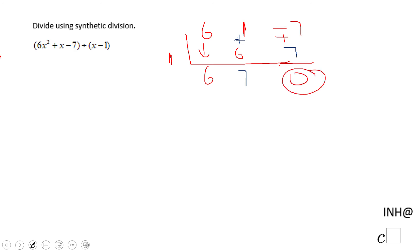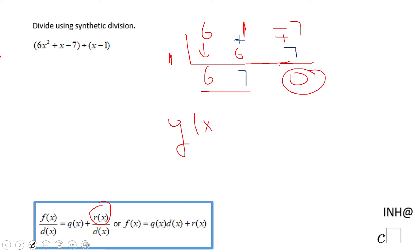This last number you get here is the remainder, and the first two numbers represent q of x, represent the answer. Now the other one will be 6x. You drop one degree, right? It was 6x squared, you're going to make it 6x plus 7.